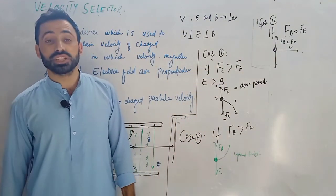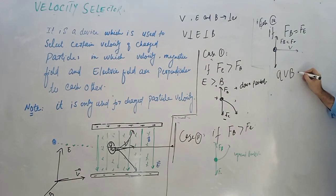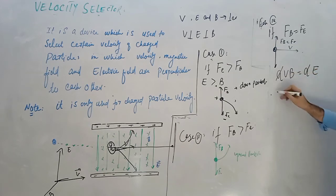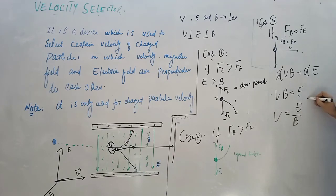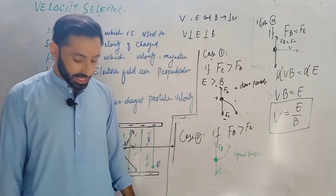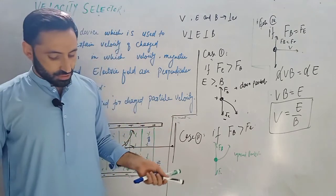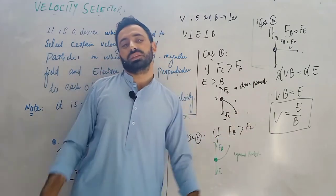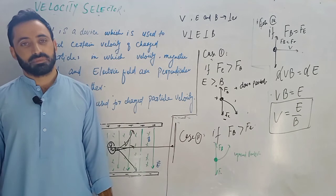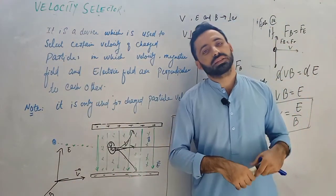We can write: FB equals FE, which means qVB equals qE, therefore V equals E divided by B. This is called the velocity selector — it gives us the speed of the charged particle. This device is called the velocity selector.